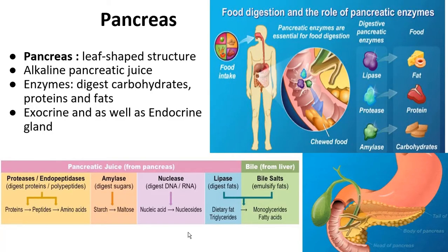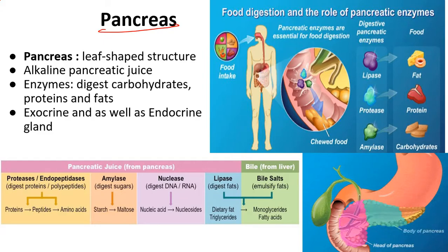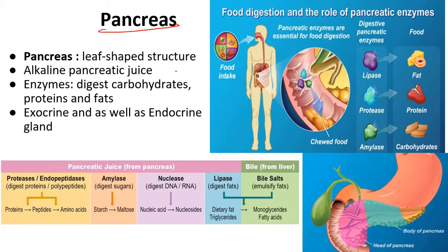Today we are going to discuss the accessory glands which help the small intestine perform its function. In the last session we discussed liver, which is one accessory gland. Now we are going to discuss another important accessory gland — the pancreas. Please make a note: pancreas is the second accessory gland which is important for the small intestine to perform its function. It is a leaf-shaped structure.